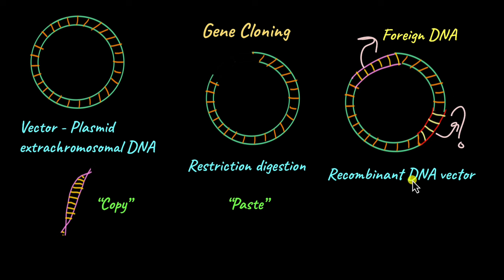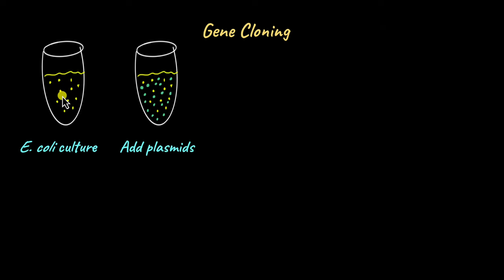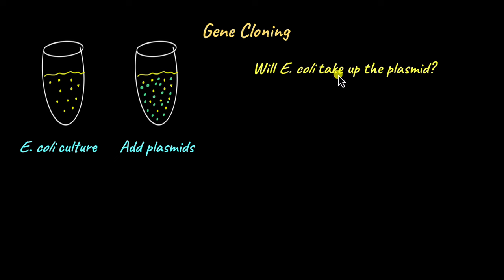This recombinant DNA vector cannot replicate by itself outside of a bacterial cell — it needs to be inserted inside a bacterium like E. coli for it to replicate. So we're going to take this recombinant DNA vector and add it to a culture of E. coli. But there is a big question: how do we make sure that the E. coli will actually take up the plasmid, since it is free-floating outside?